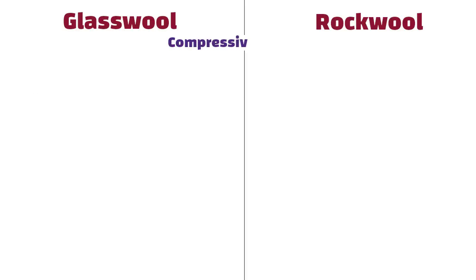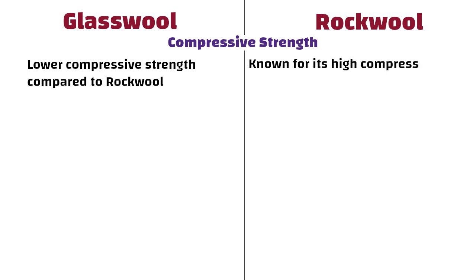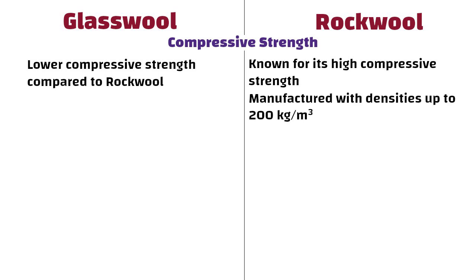Compressive Strength: Glass wool has lower compressive strength compared to rock wool. On the other hand, rock wool, known for its high compressive strength, can be manufactured with densities up to 200 kg per m³.